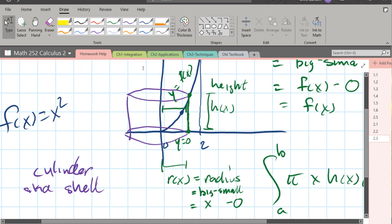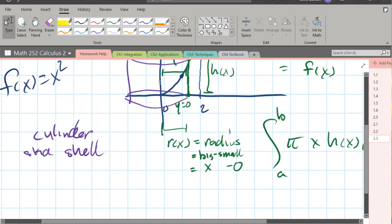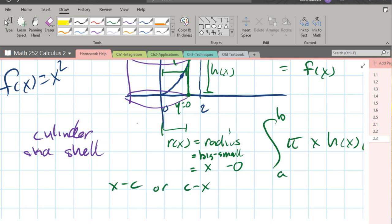All these radiuses, or radii, will be big minus small. They will either be x minus a constant, or a constant minus x, depending on what side of the region that you are rotating on.